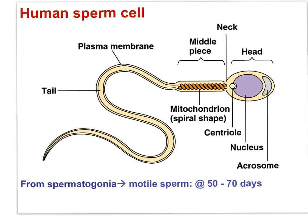Once again, we can see the acrosome, the haploid nucleus, the mitochondrion, and the flagella. Entirely surrounded by a cell membrane, this is a single cell. The acrosome is a vacuole within the cell that breaks open as the sperm contacts the outer layers of the egg, and those enzymes digest away those outer layers, allowing the sperm cell membrane to contact the egg cell membrane.